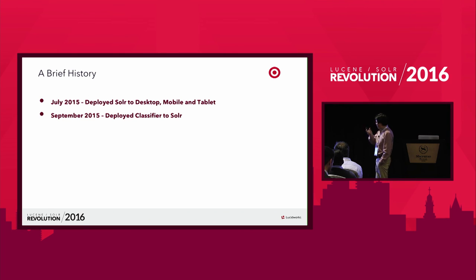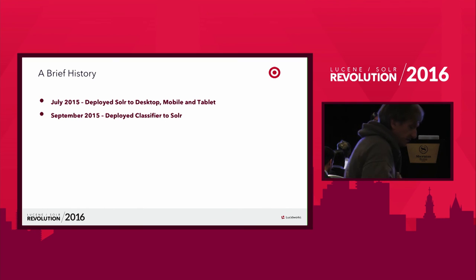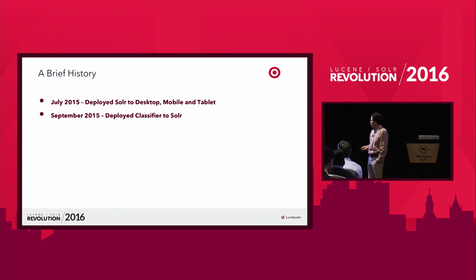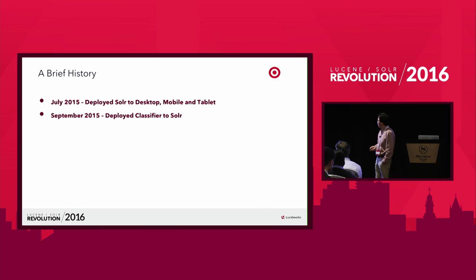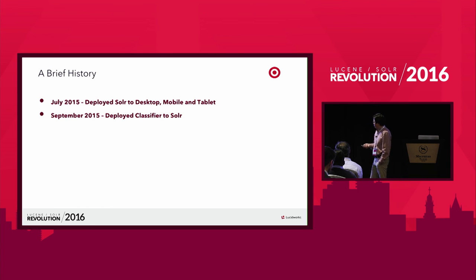This is a very brief history of where we came from. Two years ago, our team came here to declare that we were going to migrate our search engine at Target to Solr. We did that last year. In July, we successfully deployed the Solr search engine to power our desktop, then mobile, then tablet. We spent a fair amount of time tuning it to make it perfect, and then obviously we needed to improve more. In September last year, we deployed our classifier to supplement Solr, and that's what I'm going to talk about.